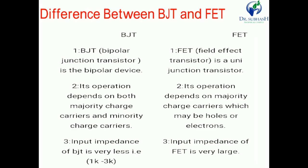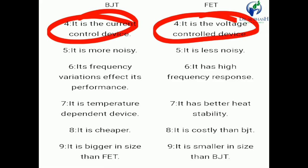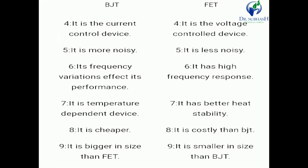BJT operation depends on both majority and minority charge carriers. The input impedance of BJT is very low compared to FET, which has very high input impedance. High input impedance is important for linear amplifier design, making FET more suitable than BJT for amplifier applications. BJT is a current control device whereas FET is a voltage control device — this is the most important difference.